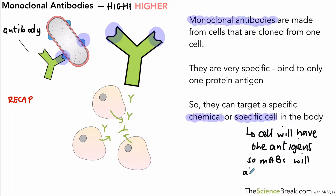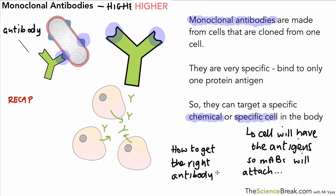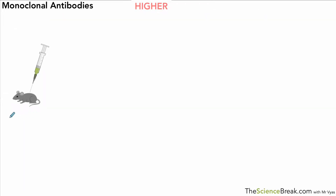You should try to use the full term 'monoclonal antibodies' when writing about it. The question is: how do we get the specific antibody that we want? We can't just take some antibodies from a blood sample and hope they're the right ones. We need to get the right antibodies. The way this is done is by using mice — we inject a mouse with the particular antigen that we want the antibody for.